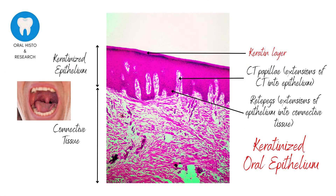This epithelium is of three types. The first one is the keratinized epithelium, which is part of the masticatory mucosa found on the hard palate, attached gingiva, and dorsal surface of the tongue. Histologically, a distinctive keratin layer without any nuclei on the surface of the epithelium is seen.